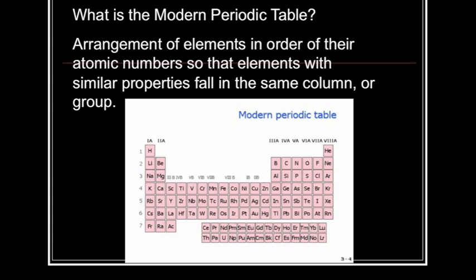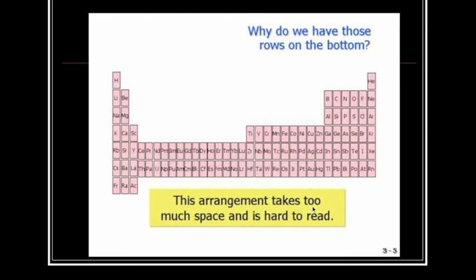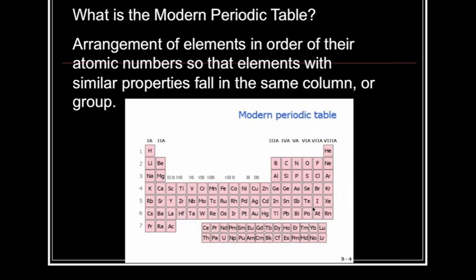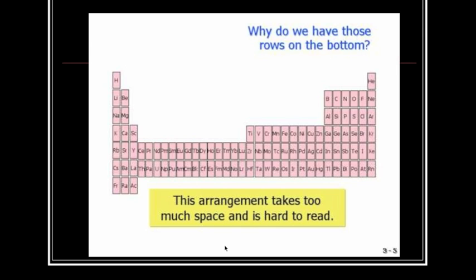The arrangement of electrons in order of their atomic number means that elements with similar properties fall in the same column or the same group. For example, the Halogens have very similar properties — they all have seven valence electrons and they all behave in the same way. The lanthanide and actinide series are placed at the very bottom of the Periodic Table just to save space.